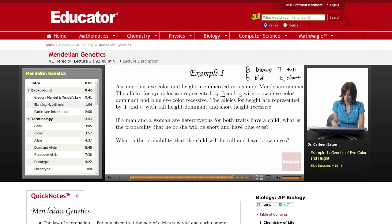If a man and a woman are heterozygous for both traits and they have a child, so we have a man who is heterozygous for both traits and a woman who is heterozygous for both traits have a child. What is the probability that he or she will be short and have blue eyes, and what is the probability the child will be tall and have brown eyes?